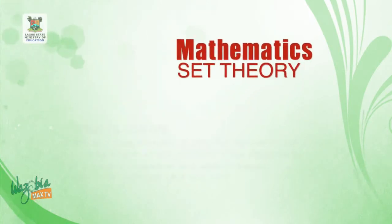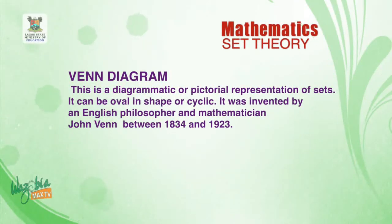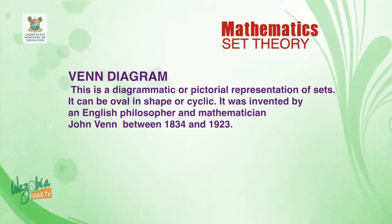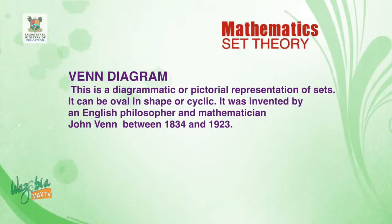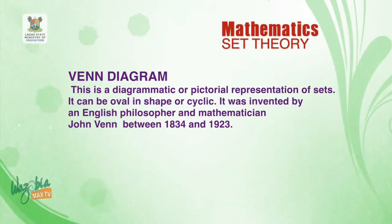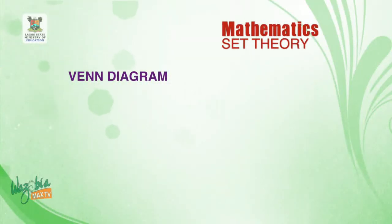Welcome back to the last session. In this session we'll be discussing Venn diagrams. A Venn diagram uses oval or circular shapes. It was invented by John Venn, who lived between 1834 and 1923. I will take one question involving two sets and another question involving three sets.